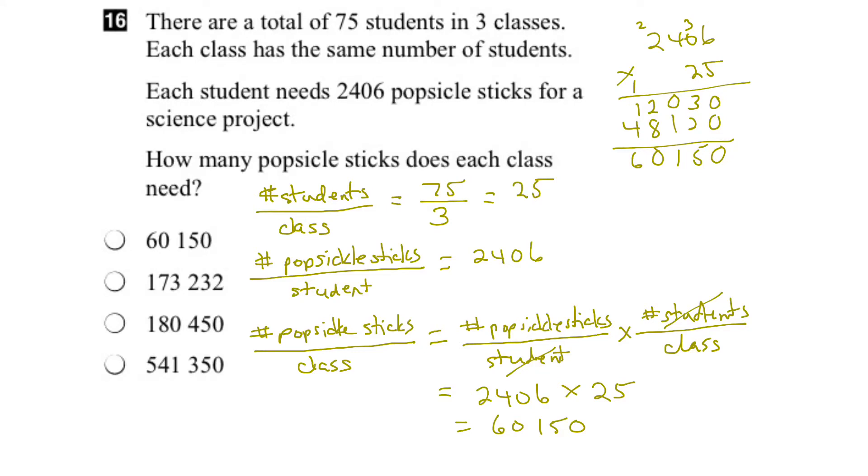So each class needs 60,150 popsicle sticks. And if we look at our options, we note that the first one is the right answer. And there you go.